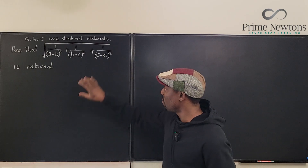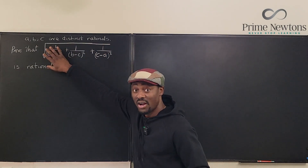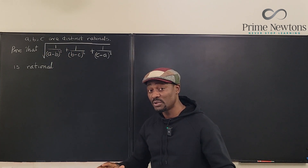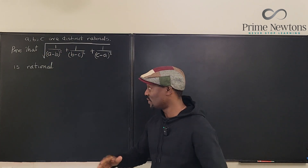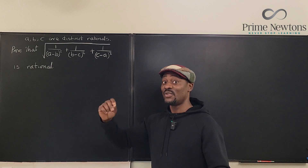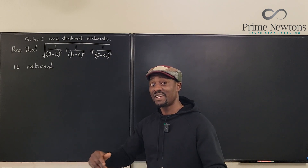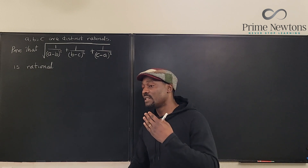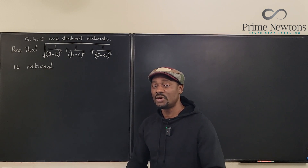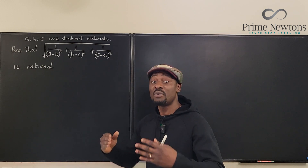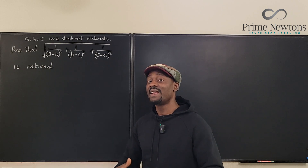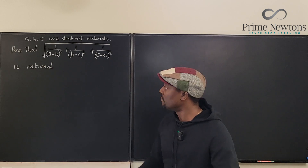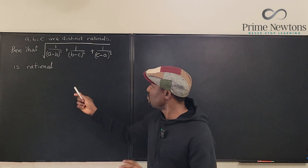We need to show that the radicand under this radical sign is a perfect square. Once we're able to do that, we have the answer — we've done the proof — because the square root of a perfect square is a rational number. Whether it's a fraction or a whole number or an integer, it doesn't matter. A perfect square under a radical sign is rational.